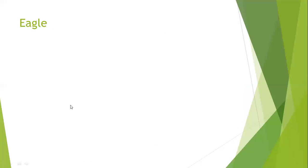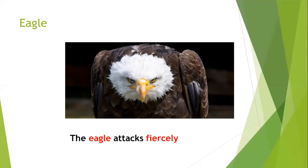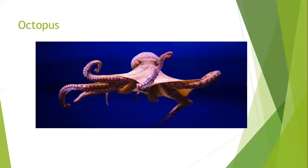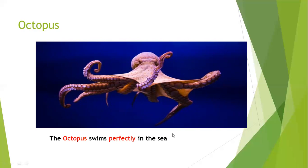Next one: eagle. Eagle in Spanish is águila. The example: the eagle attacks fiercely — el águila ataca ferozmente. Next: octopus. An octopus is pulpo in Spanish. The example: the octopus swims perfectly in the sea — el pulpo nada perfectamente en el océano. Perfect becomes perfectly, and you already know how to translate that word.